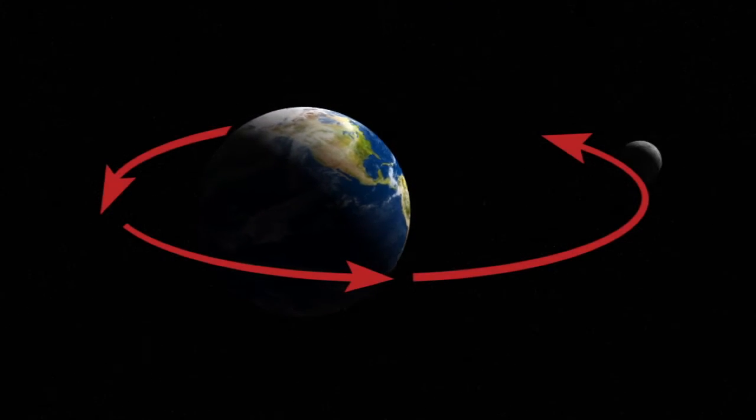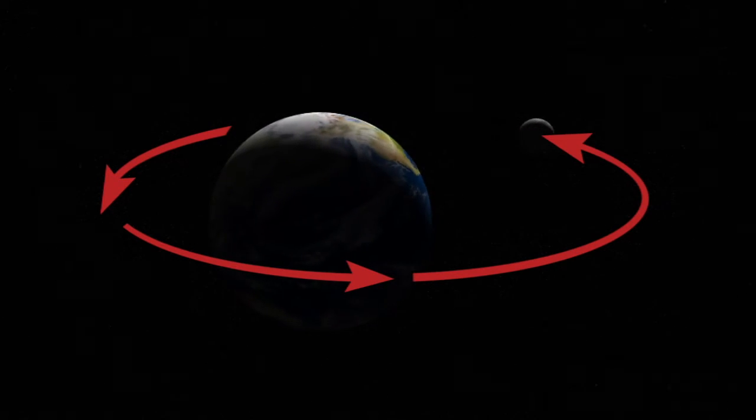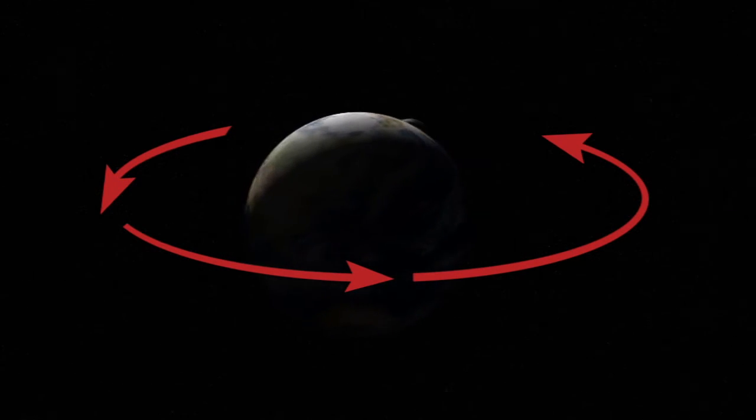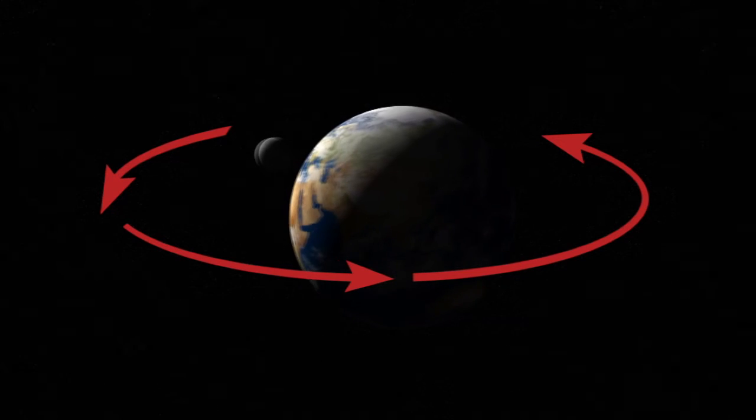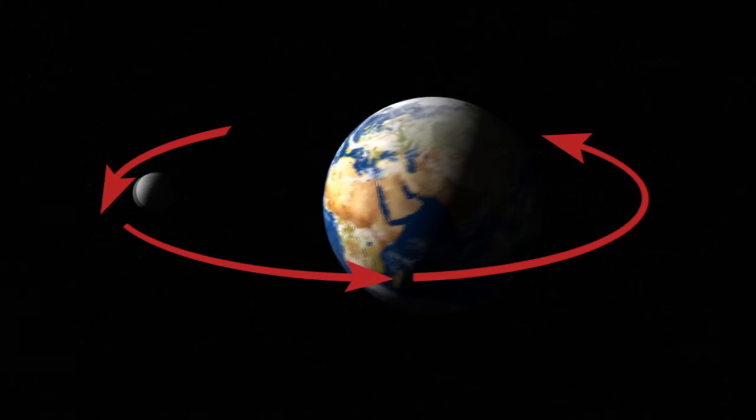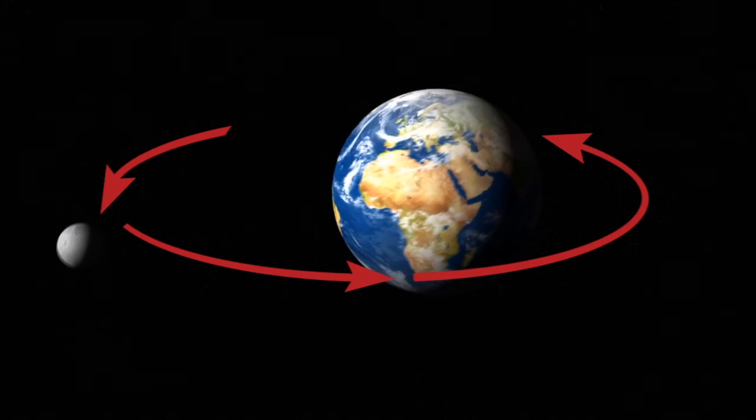Our Moon's orbit is also an ellipse. Because our Moon's orbit is an ellipse and not a circle, the Moon is at different distances from the Earth at different points in its orbit.